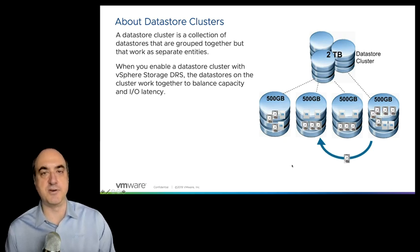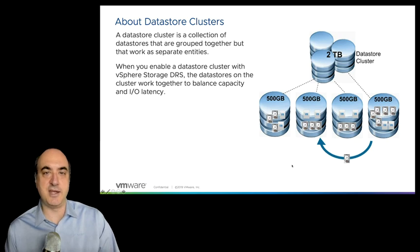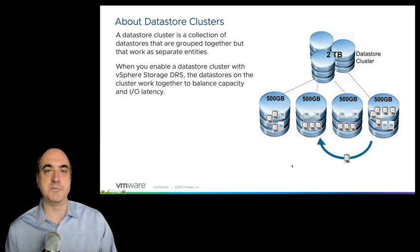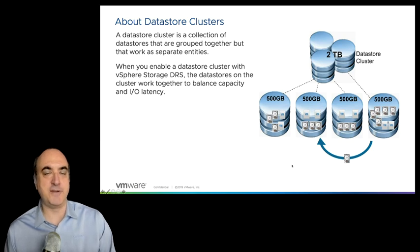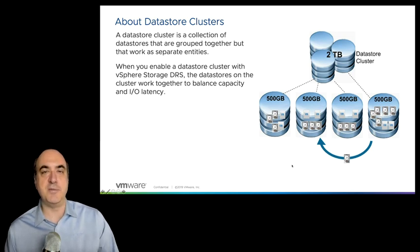Another feature of storage DRS — not always enabled — is IO latency monitoring. If a data store starts showing latency, storage DRS can move one or more VMs to another data store to lower that latency, creating balance in disk performance. Capacity balancing is the required feature; IO latency monitoring is optional. When you enable IO latency monitoring, it automatically turns on storage IO control on each data store, providing the metrics storage DRS uses to decide when to migrate VMs.